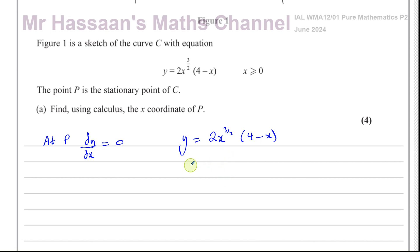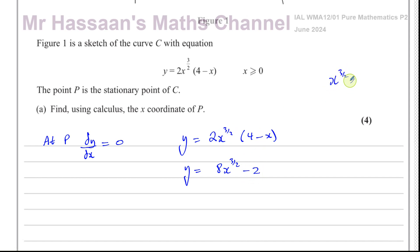We're going to prepare the equation for differentiation by expanding the bracket. So 2 times 4 is 8, giving 8 times x to the power of 3 over 2. Then 2 times minus 1 is minus 2, and x to the 3 over 2 multiplied by x to the power of 1 — you add the powers: 3 over 2 plus 1 is 3 over 2 plus 2 over 2, which is 5 over 2. So we have 8x to the 3 over 2 minus 2x to the power of 5 over 2.